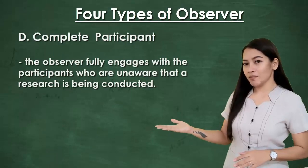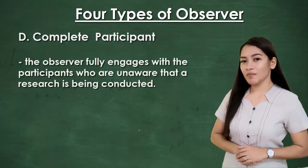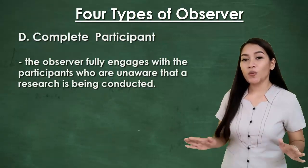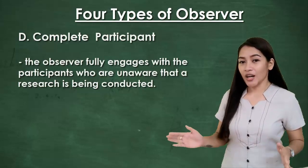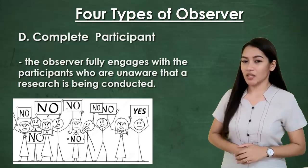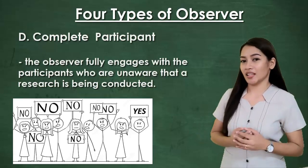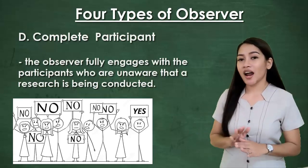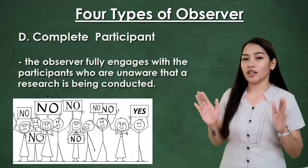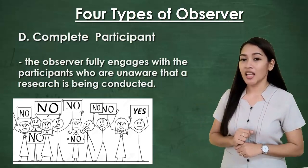Fourth is the complete participant. This is a fully embedded researcher, almost like a spy. Here the observer fully engages with participants and partakes in their activities. Participants aren't aware that observation and research is being conducted, even though they fully interact with the researcher.